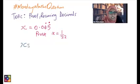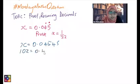So if x equals 0.04545, then 10x would equal 0.45454. I'll keep it consistent and have it as five decimal places, okay?